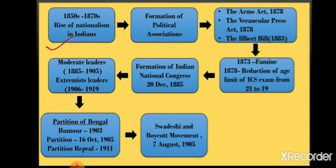Indians started feeling patriotism and developing the feeling that India is their nation and only for Indians, and Britishers should be thrown out. The rise of nationalism gave birth to various political organizations. Britishers introduced three major acts to restrict the nationalist movement: the Arms Act of 1878, the Vernacular Press Act of 1878, and the Ilbert Bill Controversy in 1883. The Ilbert Bill Controversy was a major reason for the formation of the Indian National Congress.